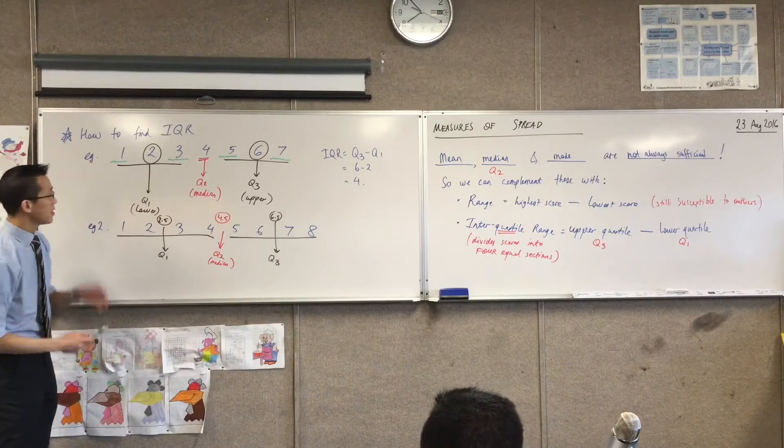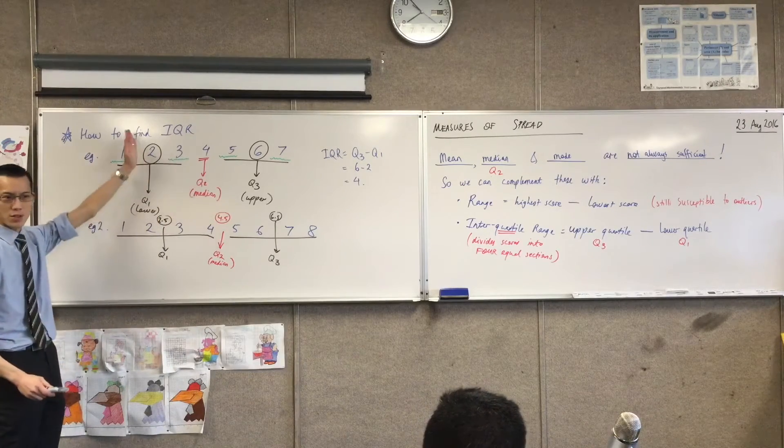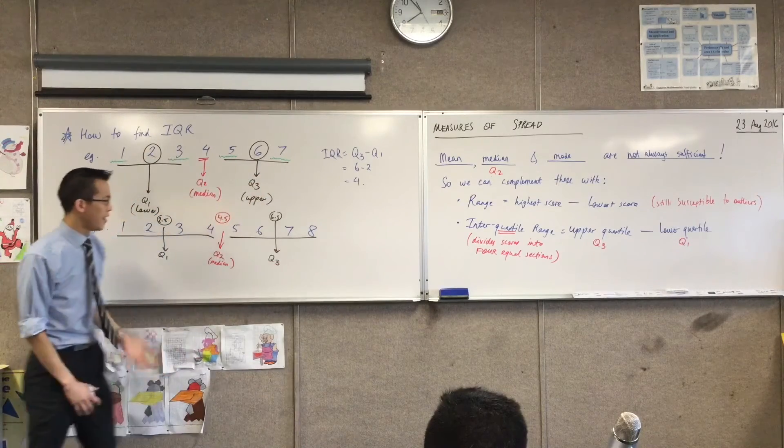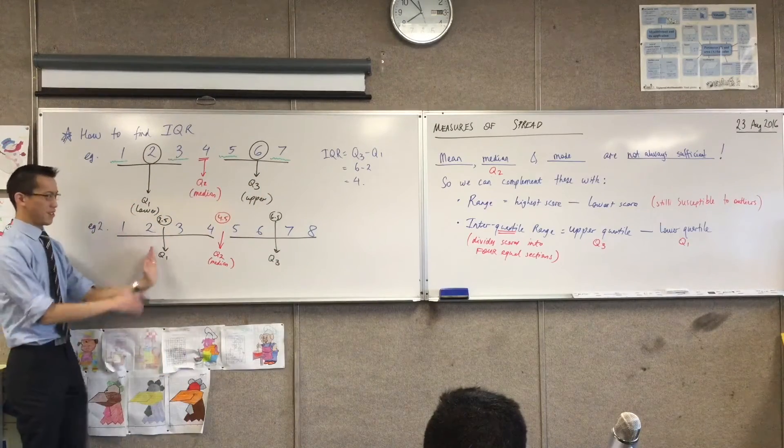Okay, so you can see, sometimes, the numbers, all of your quartiles will land on some of the scores, just like the median. Sometimes it doesn't. It lands all between.